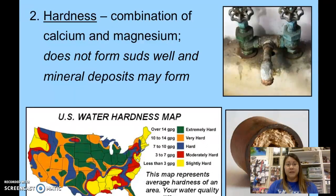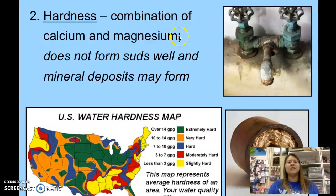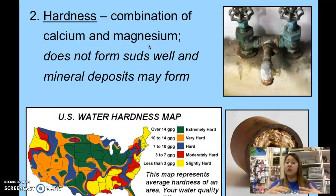Water hardness is another thing people check with water samples. It's not about water being physically hard, but about having two minerals in it — alkaline earth metals from the periodic table: calcium (Ca) and magnesium (Mg). Some water samples contain calcium and magnesium because of the minerals in the ground in certain aquifers or rock layers that get absorbed into groundwater.